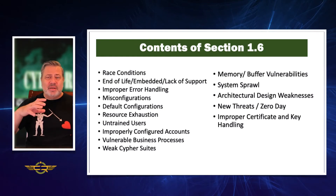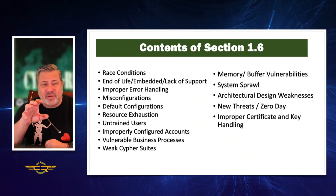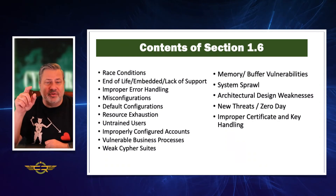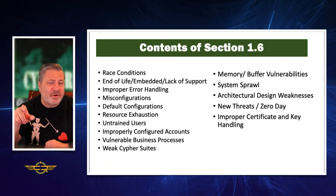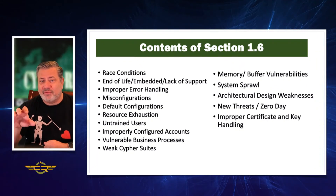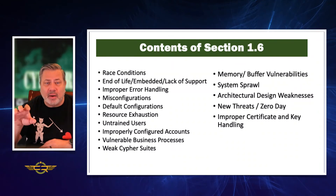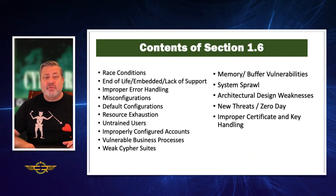Section 1.6 of Domain 1 contains these 17 items, and we'll cover each in an individual video: race conditions; end of life, embedded, or lack of support; improper error handling; misconfigurations; default configurations; resource exhaustion; untrained users; improperly configured accounts; vulnerable business processes; weak cipher suites; memory and buffer vulnerabilities; system sprawl including virtualized areas; architectural design weaknesses; new threats and zero days; and improper certificate and key handling.